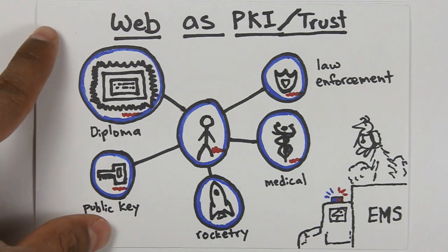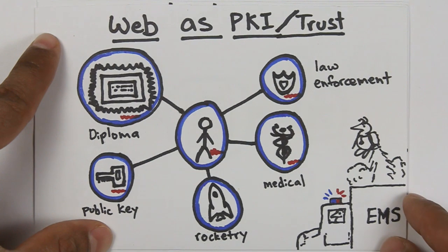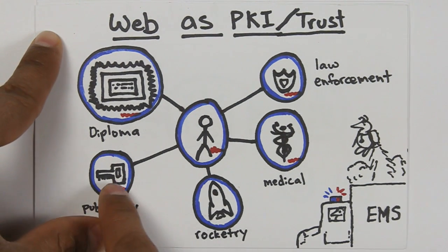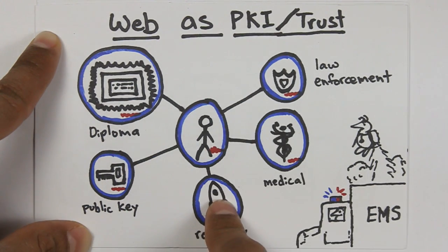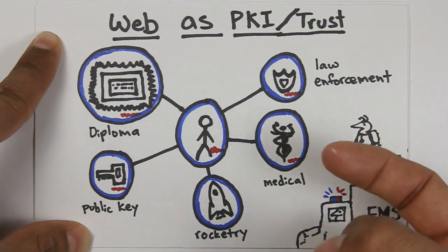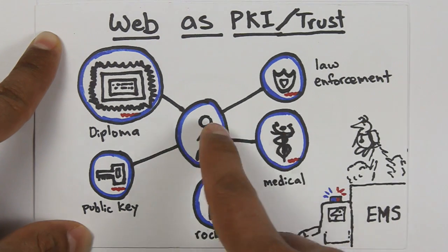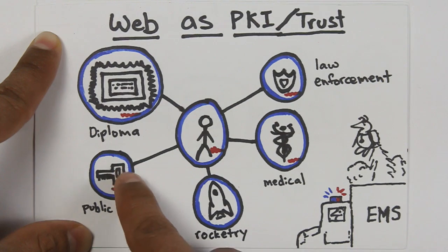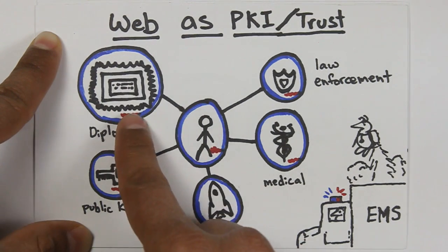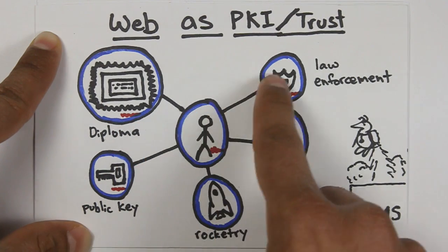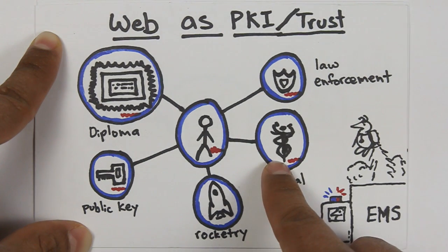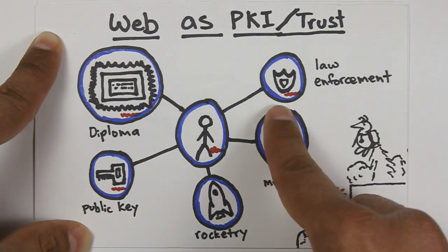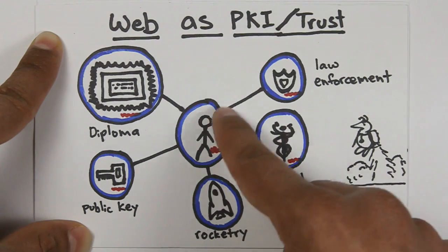What we're really trying to build here is a system where you specify the links to your keys and other really important credential information that you have. We're trying to turn the web into a huge public key infrastructure, a big trust mechanism. You have a person here that is linked to not only their public key, but let's say their university degree and diploma, which has been digitally signed by the university, or a law enforcement credential digitally signed by a government, or a medical credential digitally signed by a university that grants training in the medical profession. And all these pieces of information are linked data.